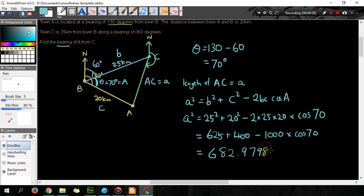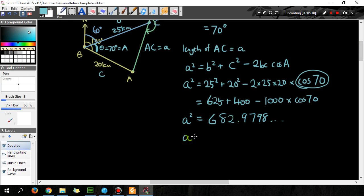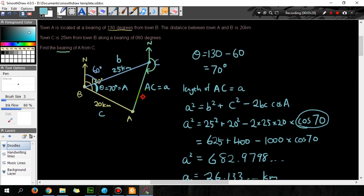682.9798 and so on. That's a². Now make sure your calculator is on degrees because the question is giving it to you in degrees, not radians. And then a is equal to the square root of that, so that's 26.133 kilometers. So 26.133 kilometers, that's this line here.